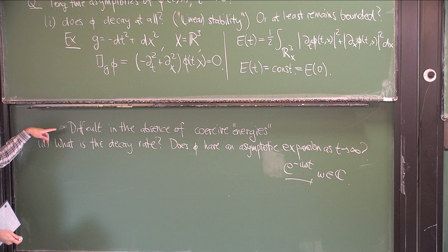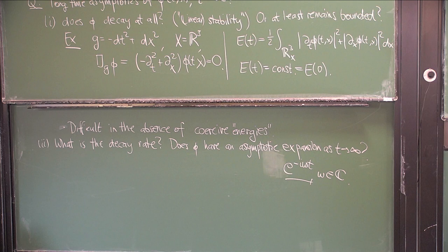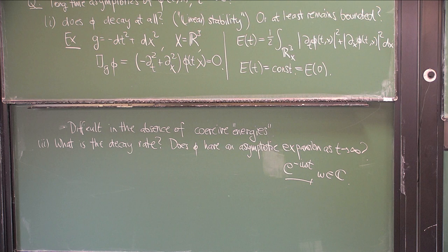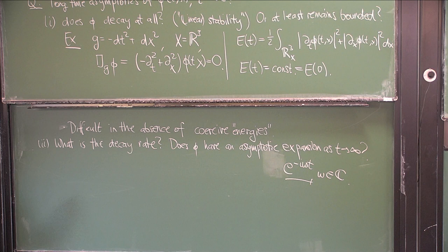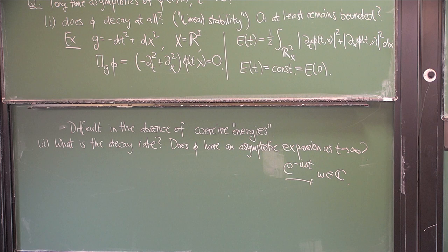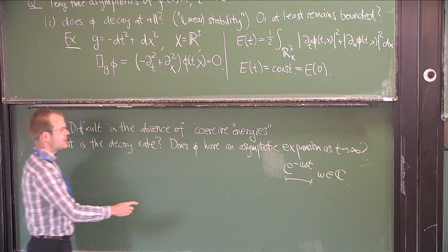Also in this context of decay of correlations, if you have some measure-preserving flow, then the correlation of two functions is obviously bounded — so that's a little analog of the conserved energy statement. In the case of decay of correlations, it's clear that the correlation function remains bounded, and if you're lucky, it has an expansion into some constant term plus exponentially decaying further contributions.